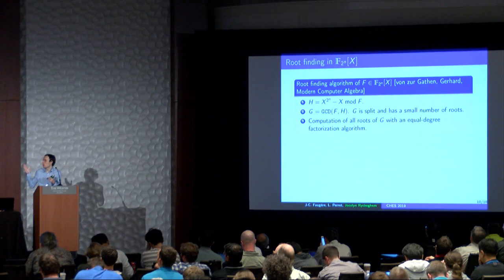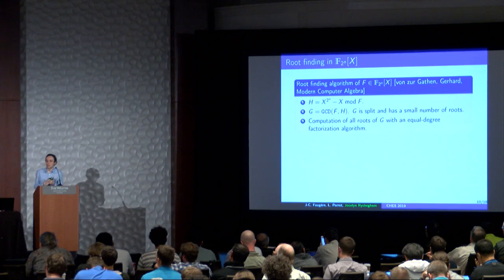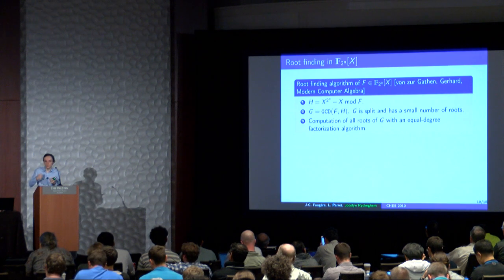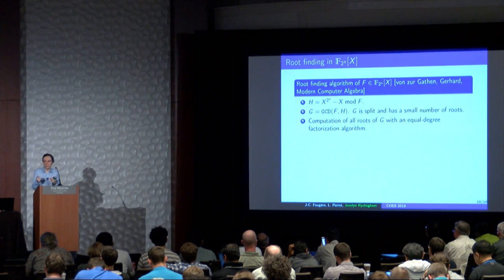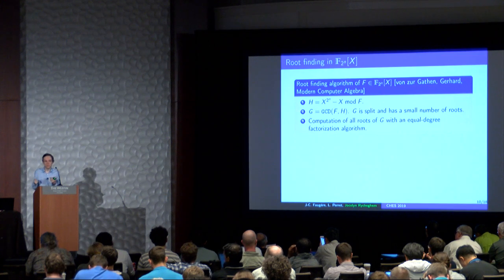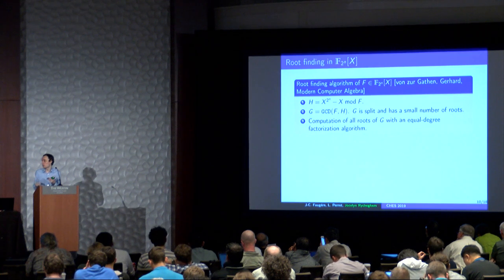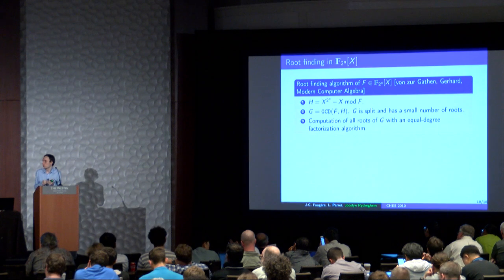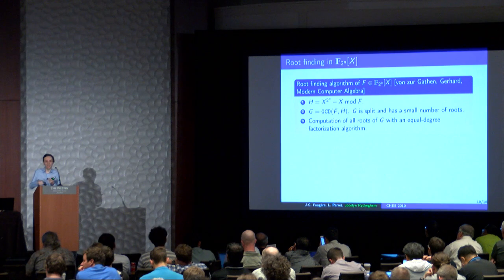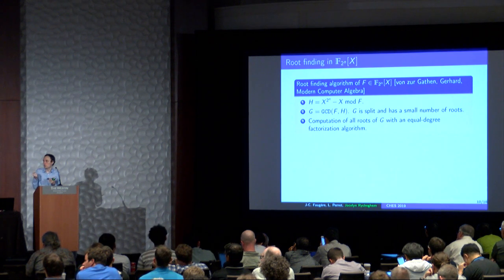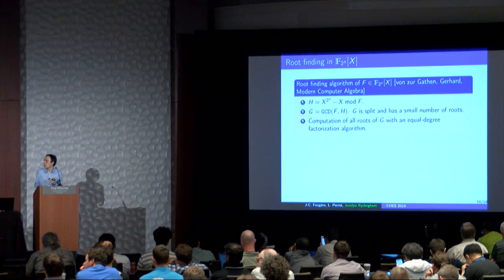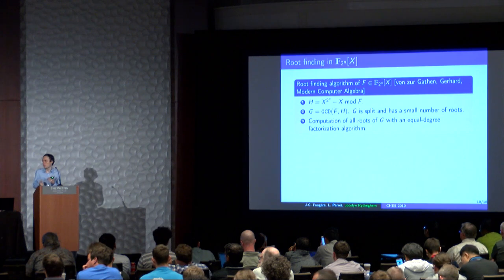The last important operation for the signing process is root finding in GF(2^N)[X]. How do we find the roots? We use the Berlekamp algorithm. The principle: the polynomial X^(2^N) - X has as roots all elements of GF(2^N). If we take this polynomial and compute the GCD with F, we get polynomial G of minimal degree containing all roots of F. When we have this polynomial, we can use an equal-degree factorization algorithm to find all roots. But in practice, computing the GCD directly is bad because the degree is very high. So first, we compute the modular reduction of X^(2^N) - X modulo F, then compute the GCD to decrease the degree. The first step is the most important because it takes the most time.